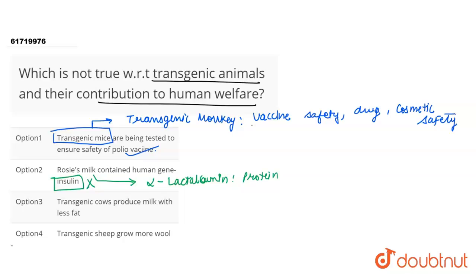Since transgenic cow produces milk with less fat, this is also right — the fat percentage is reduced in transgenic cow.